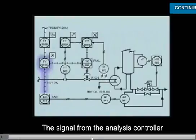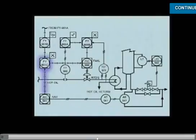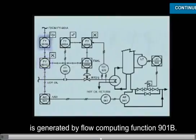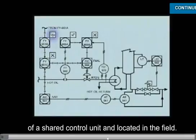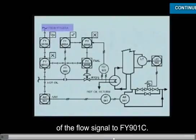The signal from the analysis controller is received by multiplier function 901c. The other input to this multiplier function is generated by flow computing function 901b. This is a time-oriented function that is part of a shared control unit and located in the field. This note indicates the source of the flow signal to FY901c.